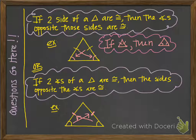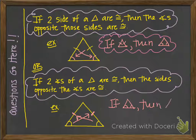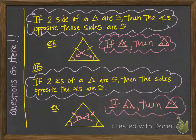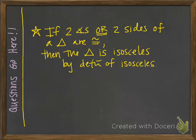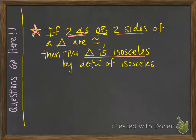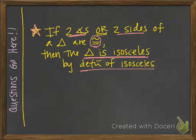The shortcut for writing this theorem in a proof is similar to the previous one — just abbreviate with symbols: if two angles are congruent, then two sides are congruent. In a proof, if you are trying to prove that a triangle is isosceles, you need to have stated either that two angles or two sides of that triangle are congruent, then on the next line state the triangle is isosceles with the reason being definition of isosceles.